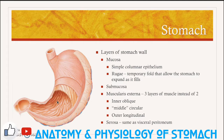The next layer is the submucosa, followed by the muscularis externa. Normally this layer has two layers of muscle, but in the stomach there are three: the inner oblique, the middle circular, and outer longitudinal. Since we are now below the diaphragm, the outermost layer is called the serosa, which is actually the same as the visceral peritoneum.